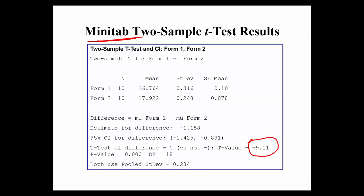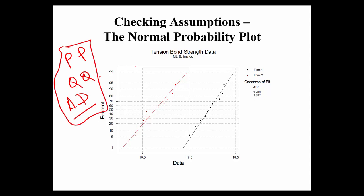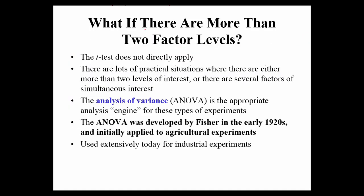The thumb rule is: if t0 lies between minus 2.1 and 2.1, it is consistent with equality of means — the null hypothesis is true, mu1 equals mu2. If t0 lies outside that range, we go with the alternative hypothesis. One important assumption is normality, which can be verified using a probability plot (P-P plot), a Q-Q plot, or the Anderson-Darling test. In a normal probability plot, if the line is straight, the sample observations are distributed normally. The probability line should pass through the data points.